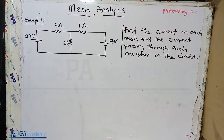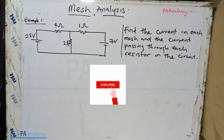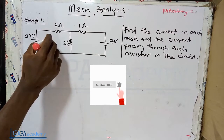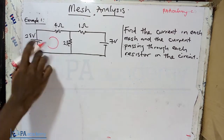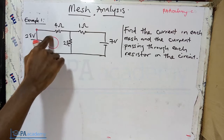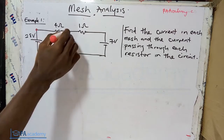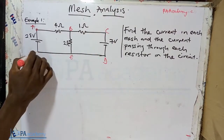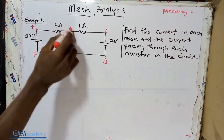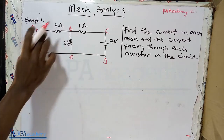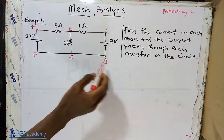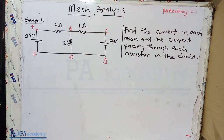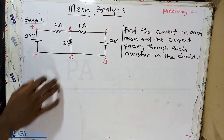The first thing you should do is identify how many meshes we have in the circuit. If you're familiar with what a mesh is, which I've explained in another video, let me label these points A, B, C, D, E, and F. So A-B-E-F and back to A is one mesh, and B-C-D-E and back to B is another mesh. We are having two meshes in this particular circuit.